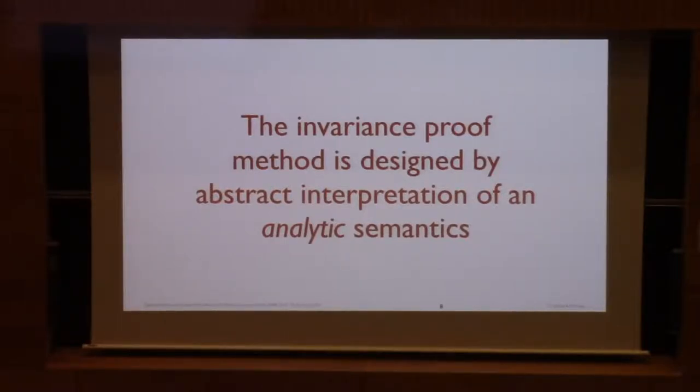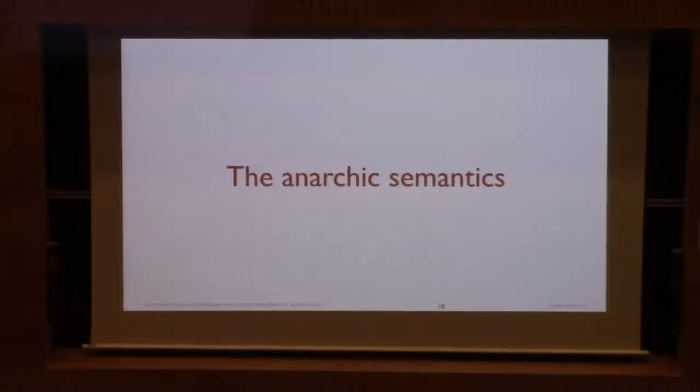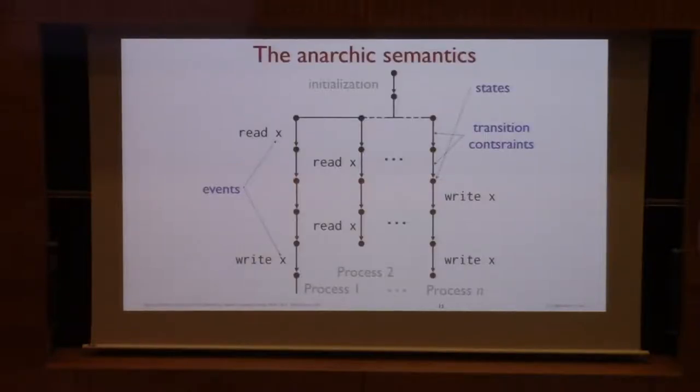The proof method was designed by abstract interpretation. And we need a semantics which is called anarchic. It is an anarchic semantics restricted by weak consistency model. So the anarchic semantics have several components. The first is a description in terms of true parallelism model of the execution of each process. Here. Boop. Doesn't work. Yes. So the description is global. It's not generated by a transition system. It's a trace which must satisfy constraints like constraints on states, constraints on transitions, and constraints on events.